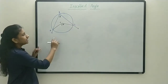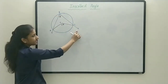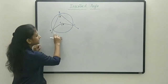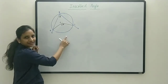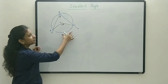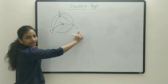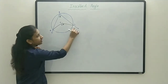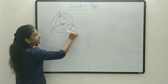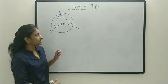For inscribed angle ABC, this is the intercepted arc. So we can say the measure of the inscribed angle is half of the measure of the intercepted arc.